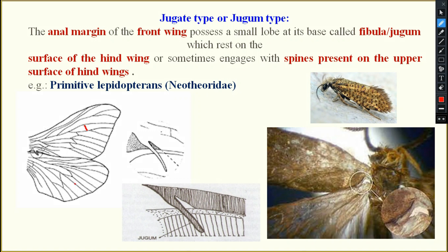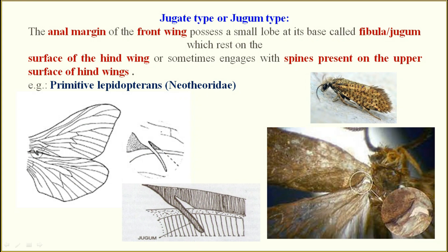At the anal margin of the fore wing there is the jugon structure, and at the coastal margin of the hind wing there is a spine-like structure. The spine will be interlinked with the jugon or fibula so that the wings are held together and the fore wing and hind wing will not be separated. The example is some groups of lepidopteran insects.